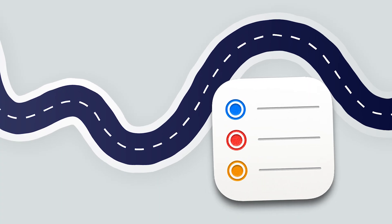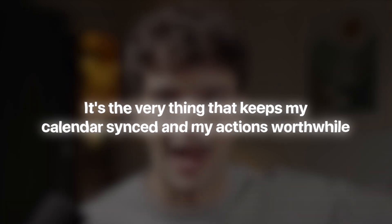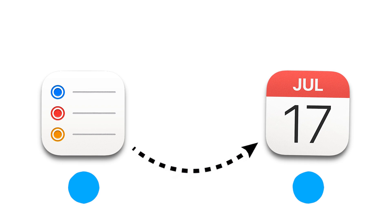Your calendar gives your year structure, your notes give you direction — but none of that matters if you don't actually do the work. That's where Reminders comes in. It's not just some fancy to-do list; it's the very thing that keeps my calendar synced and my actions worthwhile. And it starts with visibility. Because it's iOS native, you get widgets, notifications, and lock screen pop-ups — literally everything to keep tasks right in front of your eyes. That alone keeps me more accountable than anything else I've ever used. I structure my lists using the same buckets I used in Notes, and I assign colors matching my calendar. I split everything into two layers: weeklies and dailies.